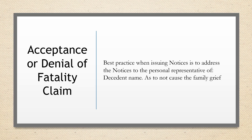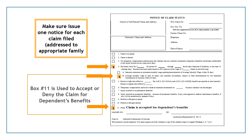Acceptance or Denial of Fatality Claim: Best practice when issuing notices is to address the notices to the personal representative of, and then the name of the deceased, so as not to cause the family grief. Make sure that each notice is issued separately for each claim. If you are accepting the claim for dependent benefits, mark box 4B and make sure you attach the Form 108, Wage Calculation Sheet, and number 11, accepting the claim for benefits. If denying the claim, mark number 11 only, indicating that the claim is denied.